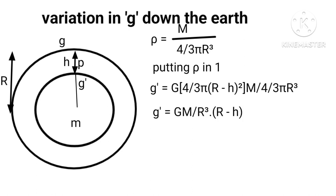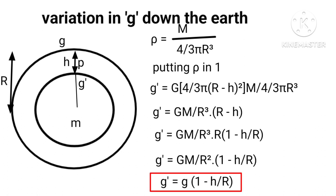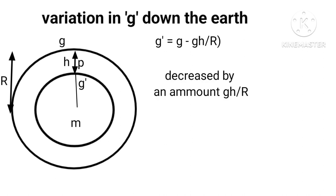We get g dash equals G times four-thirds pi times (R minus h) times rho. Since rho equals M upon four-thirds pi R cubed, substituting rho gives g dash equals GM times (R minus h) upon R cubed, which equals GM upon R squared times (1 minus h upon R). Replacing GM upon R squared by g, we get g dash equals g times (1 minus h upon R), or g dash equals g minus gh upon R. This means acceleration due to gravity decreases by an amount gh upon R when we go deep down into the earth.